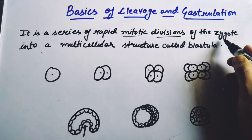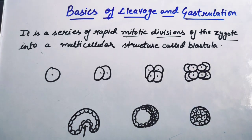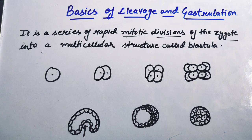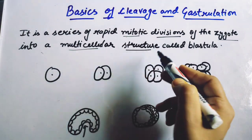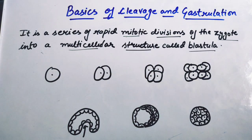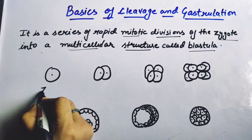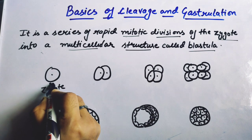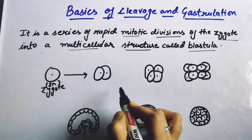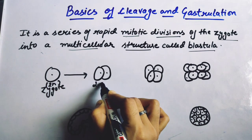What is the zygote? The zygote is our single cell structure. We will see the mitotic divisions and the formation of the multicellular structure. If we see the diagram, this is our zygote — it divides into two cells.